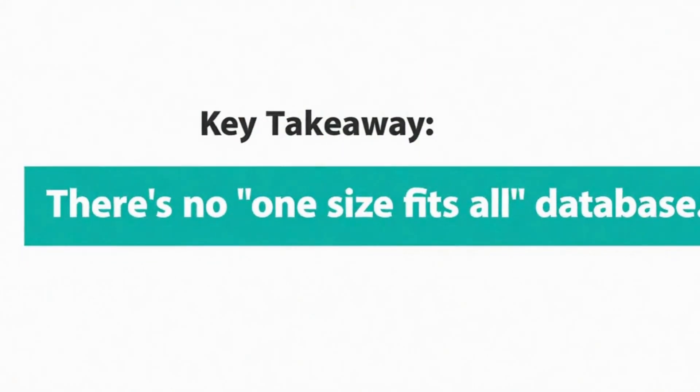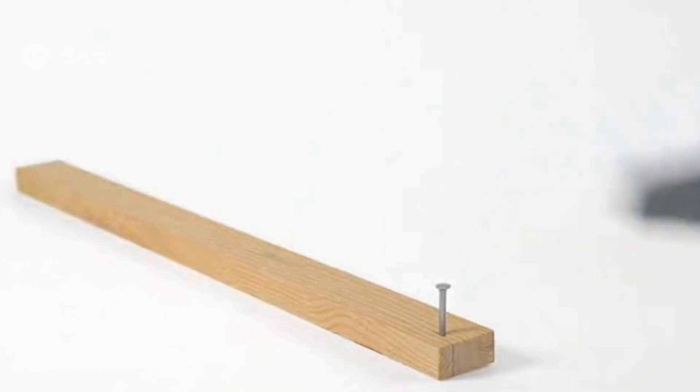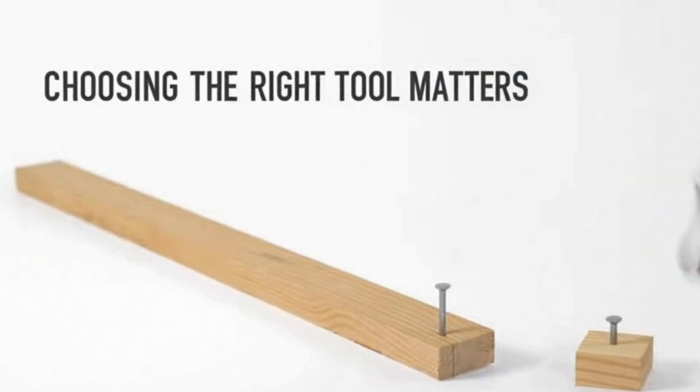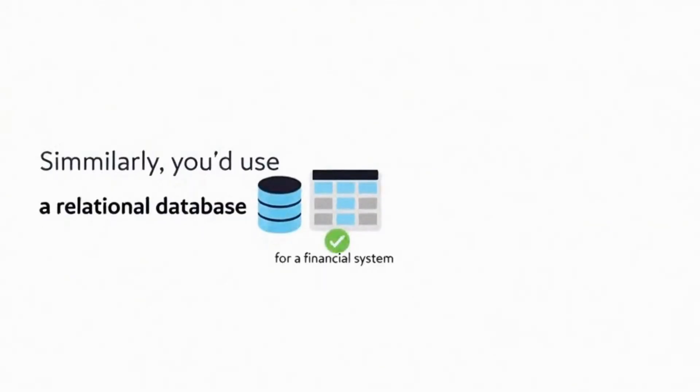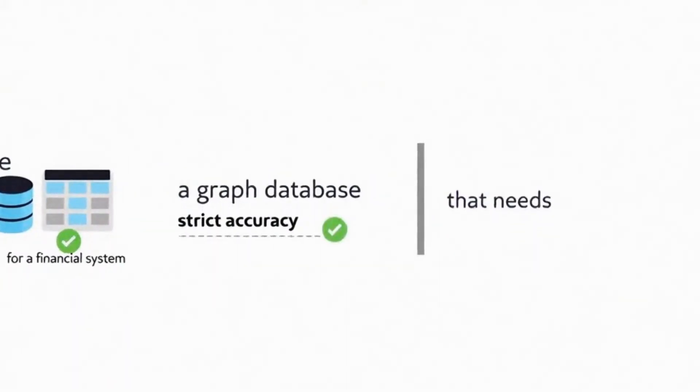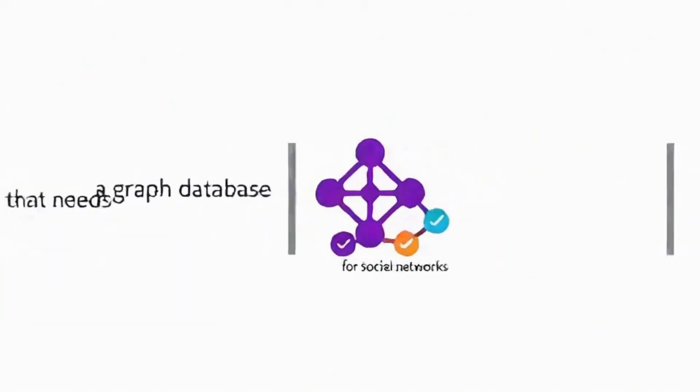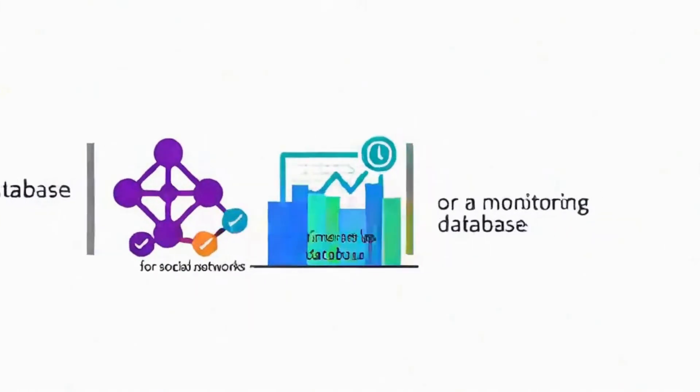Choosing the right database is like choosing the right tool for a job. You wouldn't use a hammer to cut wood or a saw to drive nails. Similarly, you'd use a relational database for a financial system that needs strict accuracy, a graph database for social networks, or a time series database for monitoring systems.